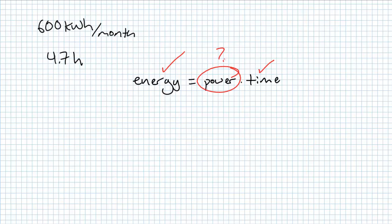We know the energy we want to produce. We know how long we get peak operating conditions. What is the power rating of the device that will do this? Since this 4.7 hours of peak sunlight is on a daily basis, what we need to do is figure out our energy per day.